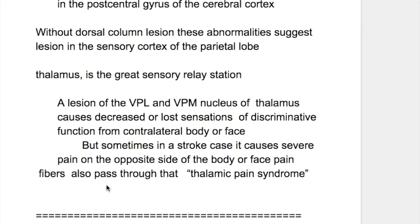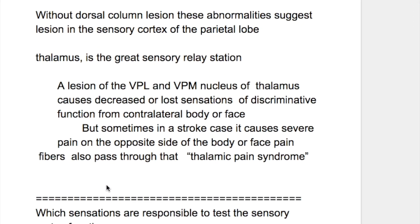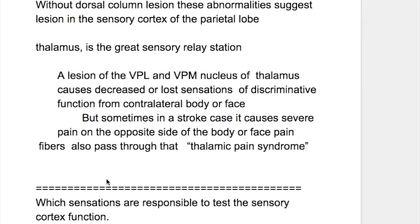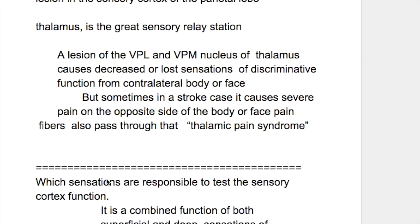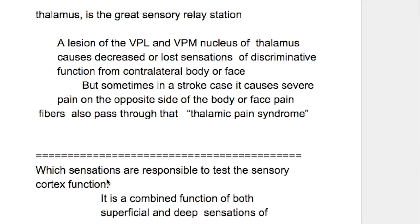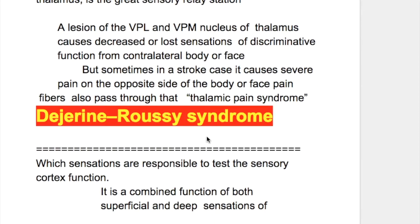The thalamus is the great sensory relay station. A lesion of the ventral posterior lateral or ventroposterior medial nucleus of the thalamus causes decreased or lost sensations of discriminative function from the contralateral body or face. In some stroke cases, it causes severe pain on the opposite side of the body or face because pain fibres also pass through that area. This is known as thalamic pain syndrome, also known as Dejerine-Roussy syndrome, a severe painful condition that starts a few weeks after the stroke.